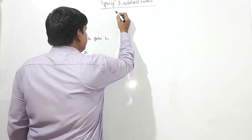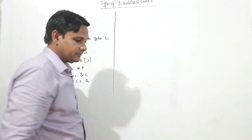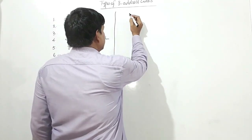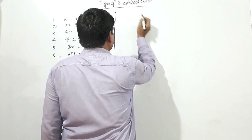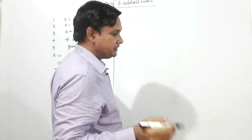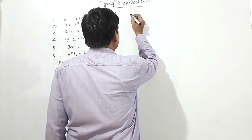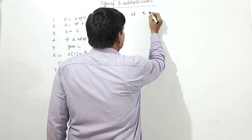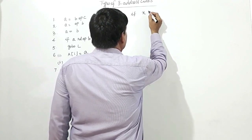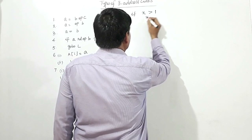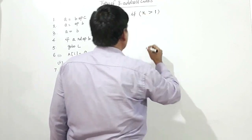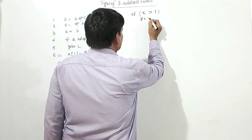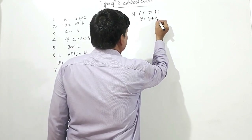This is also one type of three address code. Now we shall see how we shall implement three address code. A C code segment is given here as an example: if X greater than 1, perform some work — Y is equal to Y plus 3.